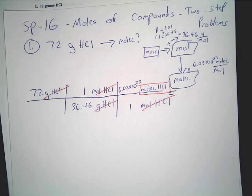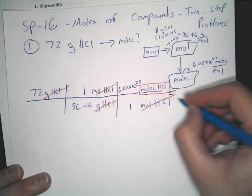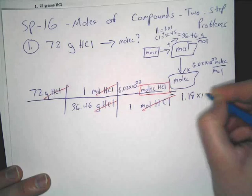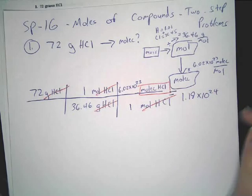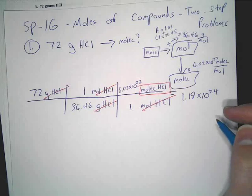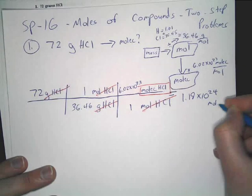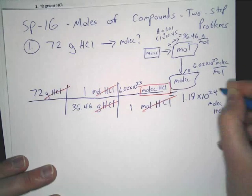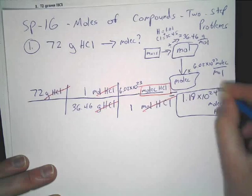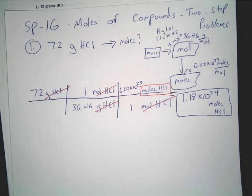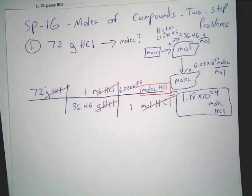So, what does this one come out to be? Anybody got a calculator or done it? 1.19 times 10 to the 24th. Say it again. 1.19 times 10 to the 24th. So, 1.19 times 10 to the 24th molecules of HCl. Yes. So, basically, it's just 6.02 times 10 to the 23rd times 2. Because that is double that.